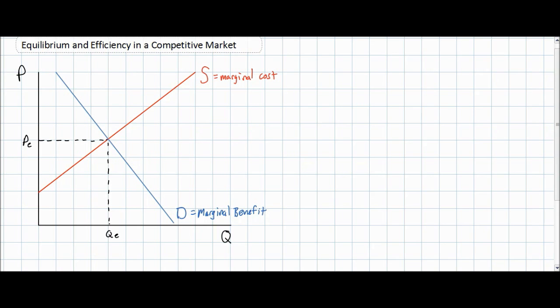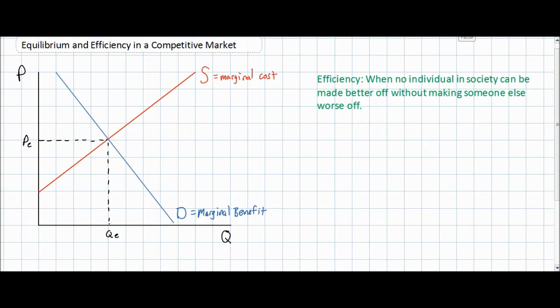Hey everybody. In today's lesson we're going to be talking about equilibrium and efficiency in a competitive market. We're going to start by defining efficiency. One definition that economists use is: efficiency exists when no individual in society can be made better off without making someone else worse off.